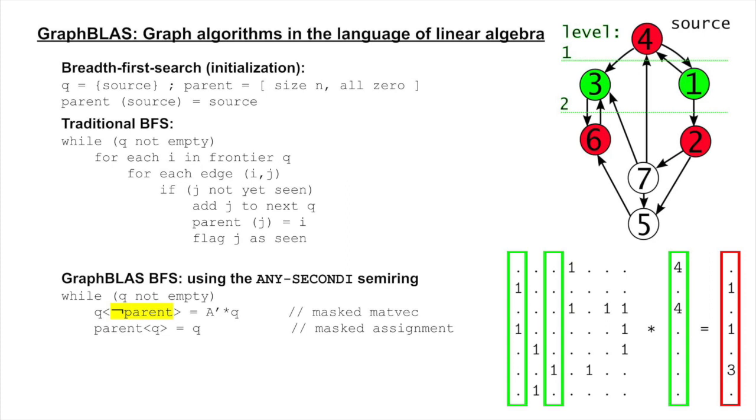Node 4 is excluded with the if-test in the traditional BFS. This translates to a matrix mask where only entries without a parent are allowed into the final result.